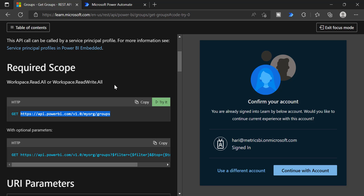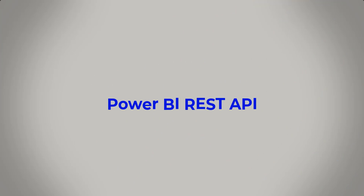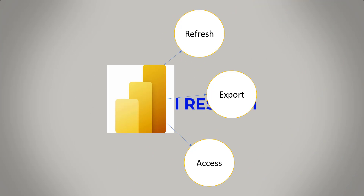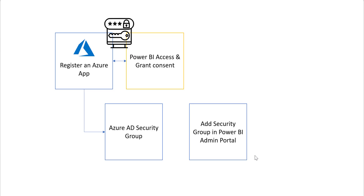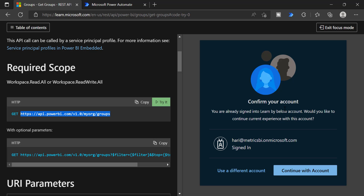With that, you can get all the information about your workspaces. Let's take a scenario — say you want to build an automated solution using these Power BI REST APIs. You have to follow steps like registering an app in Azure Active Directory, providing Power BI access for that app, and if you want to go with service principal, adding that app into a security group and placing that security group in the Power BI admin settings.